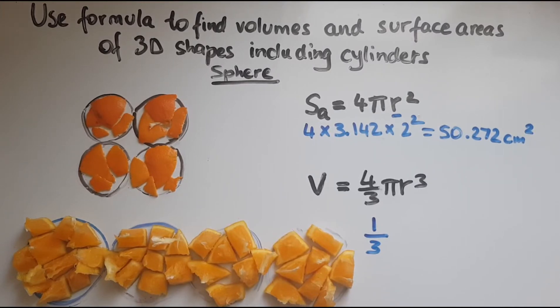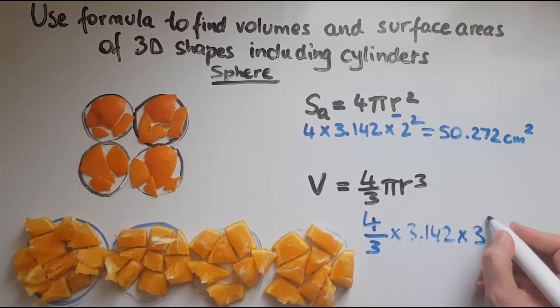If we had a sphere with a radius of three centimeters, for example, what would we do? We'd write 4/3 times 3.142 (which is π) times the radius, 3, cubed.